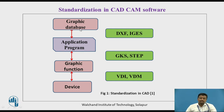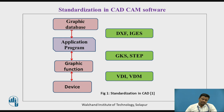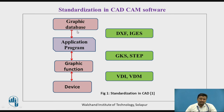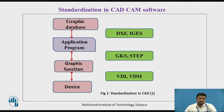All these things are interconnected. For example, if in the graphic software you do not have any tool or toolbar to create a 2D or 3D model, or you cannot provide dimensions, then what is the use of the application program? You may have the application program but cannot develop any 2D model because of the absence of a graphic database. The graphic database or library plays a very important role in developing something with the help of software. This is the standardization process in CAD CAM software.